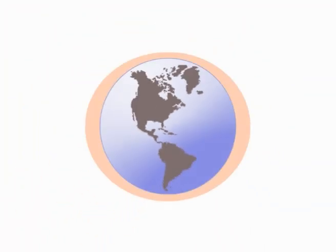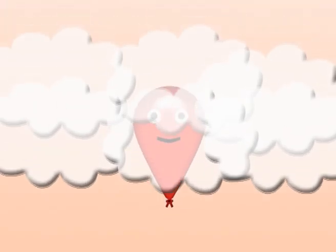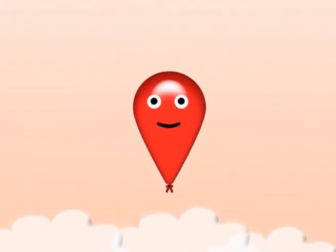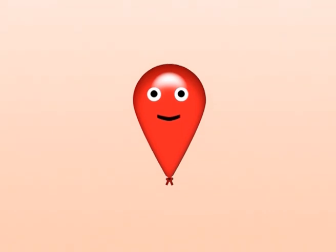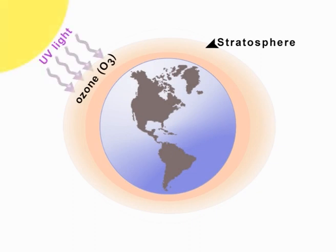The air around us is a layer called the troposphere, stretching 20 kilometers up from here. Above it is the stratosphere where air is very thin, but ozone there prevents some harmful rays from getting in.